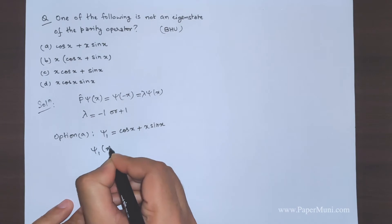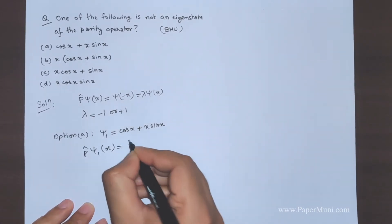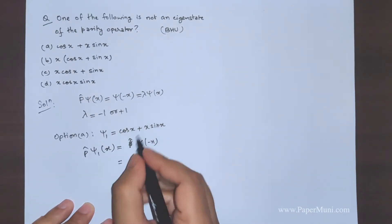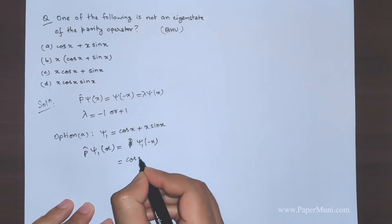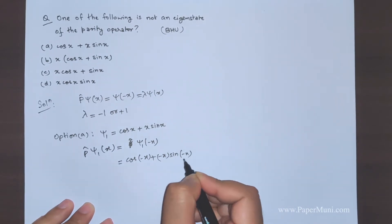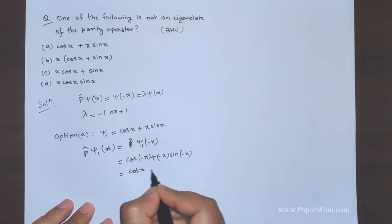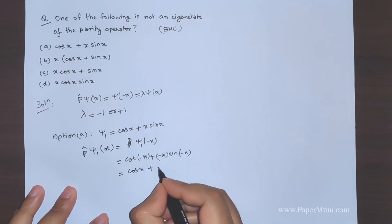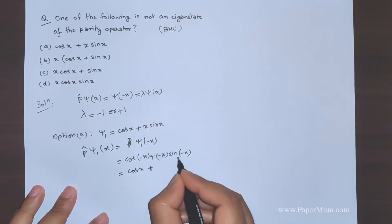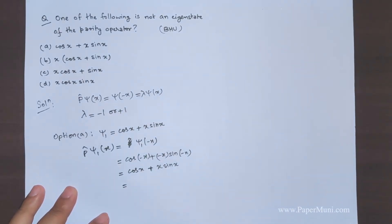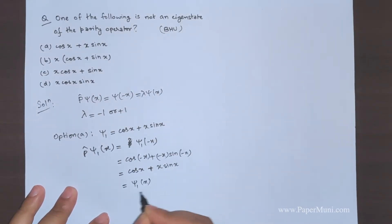Operating the parity operator gives ψ₁(-x). Putting -x in: cos(-x) = cos(x), and (-x)·sin(-x) = (-x)·(-sin x) = x·sin(x). So ψ₁(-x) = cos(x) + x·sin(x), which gives back ψ₁ with λ = +1.